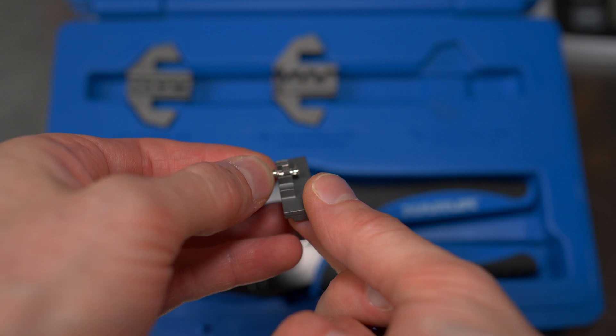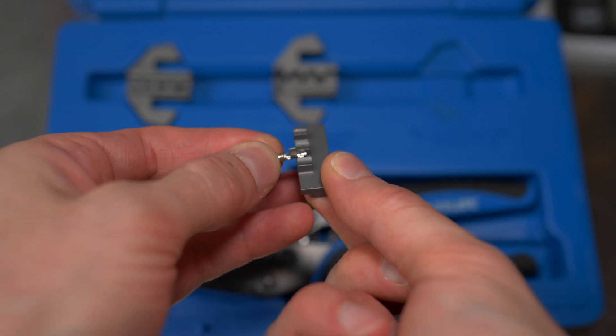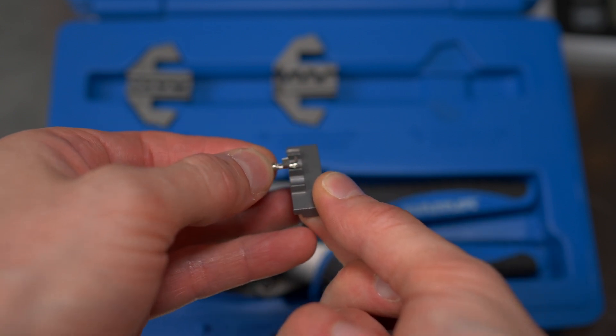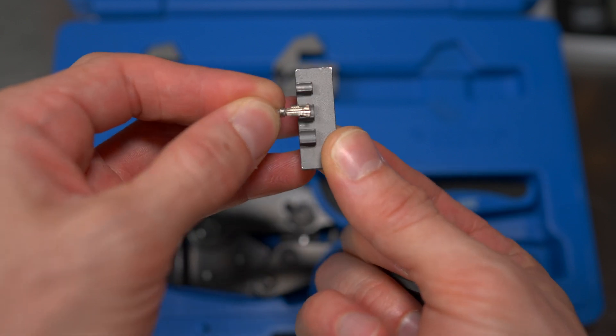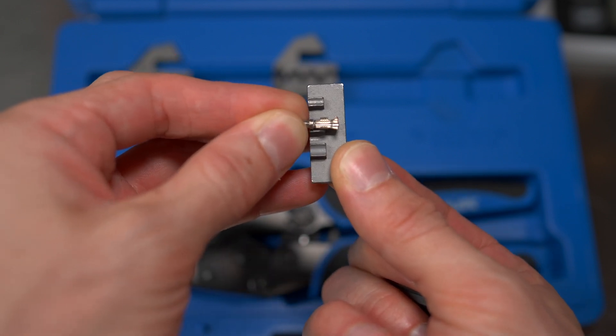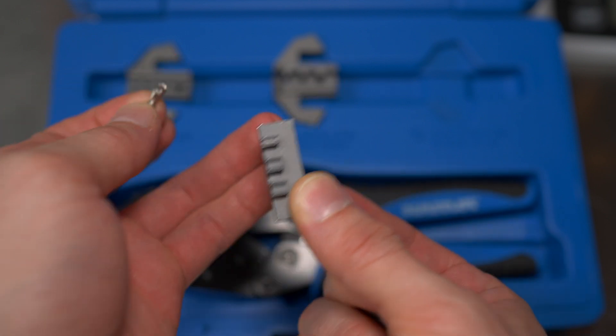So you will see what I mean when we get to the crimping portion. Now you can buy these kits with proper Deutsch Connect crimp dies, but it is kind of unnecessary and a little bit more expensive, but that's completely up to you.